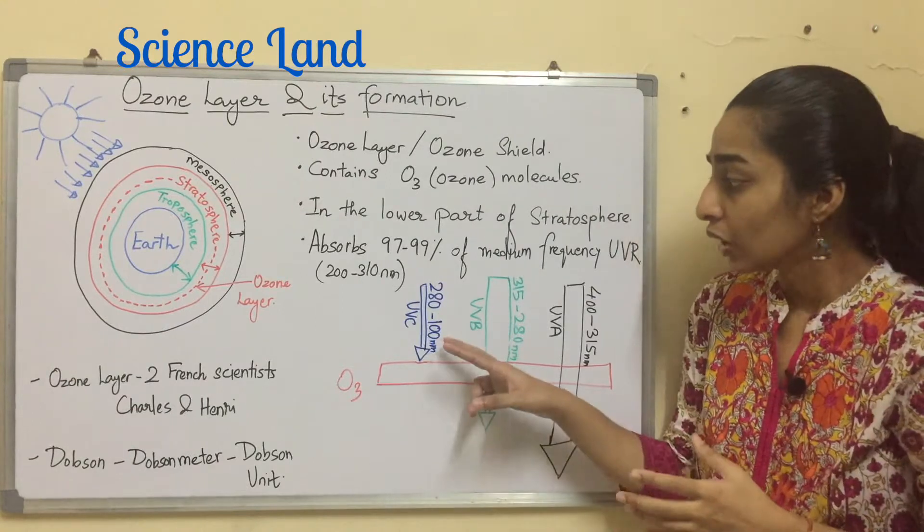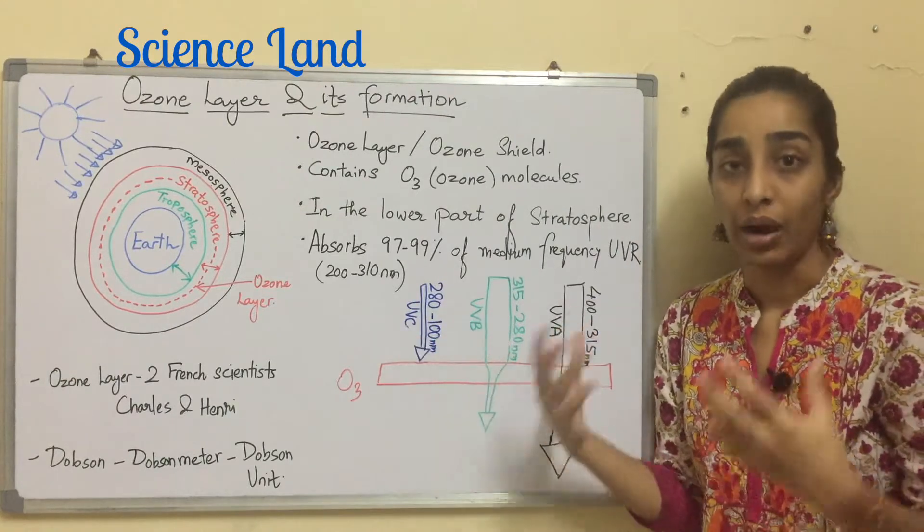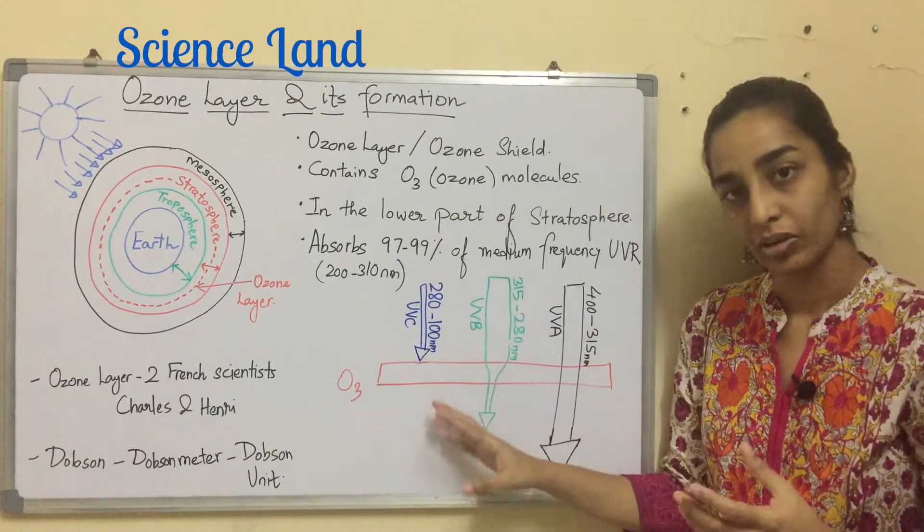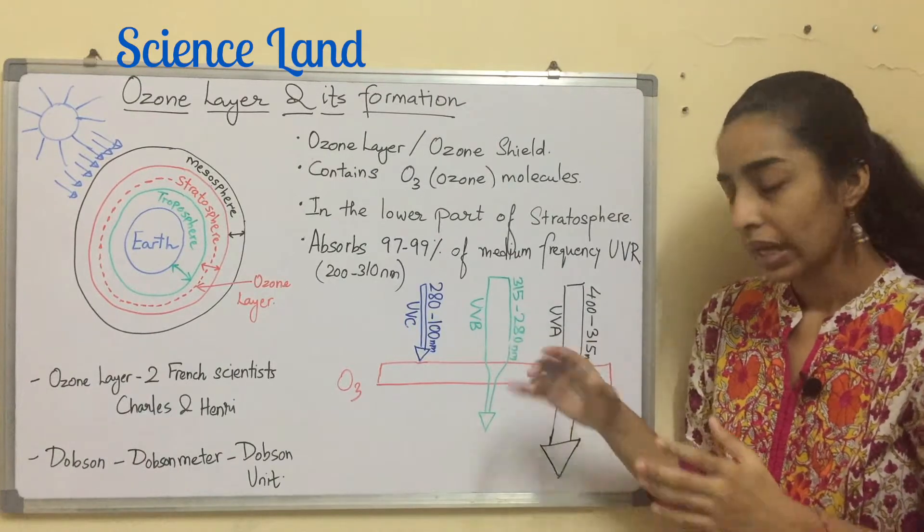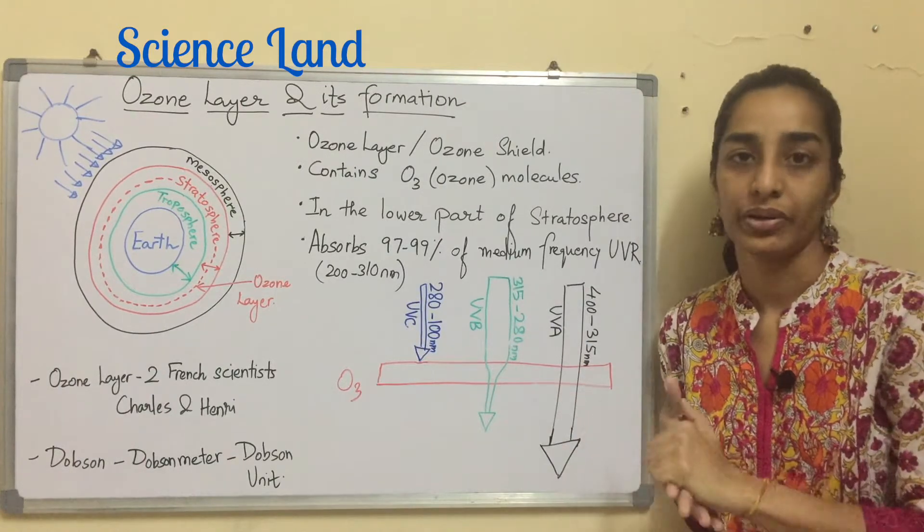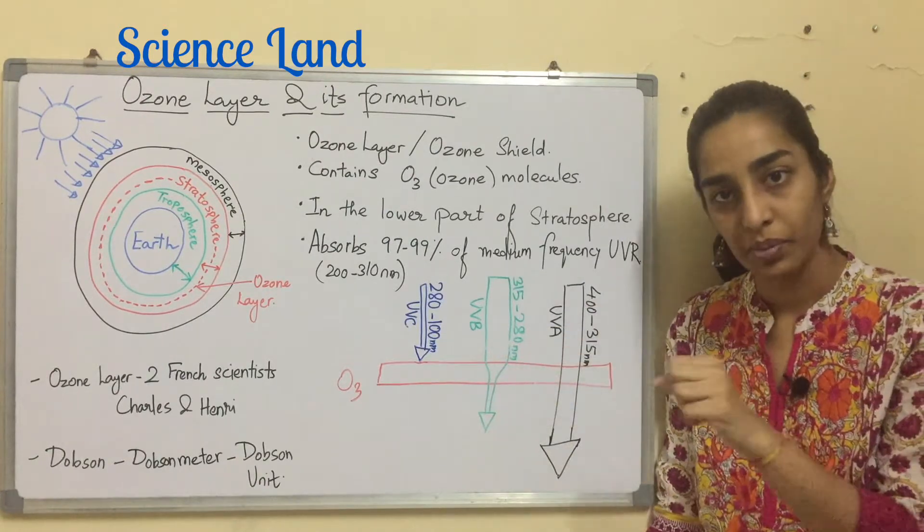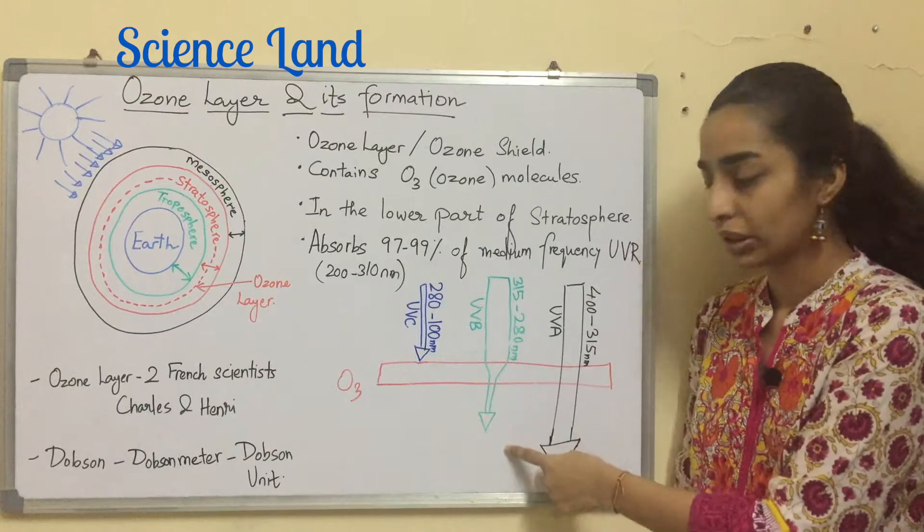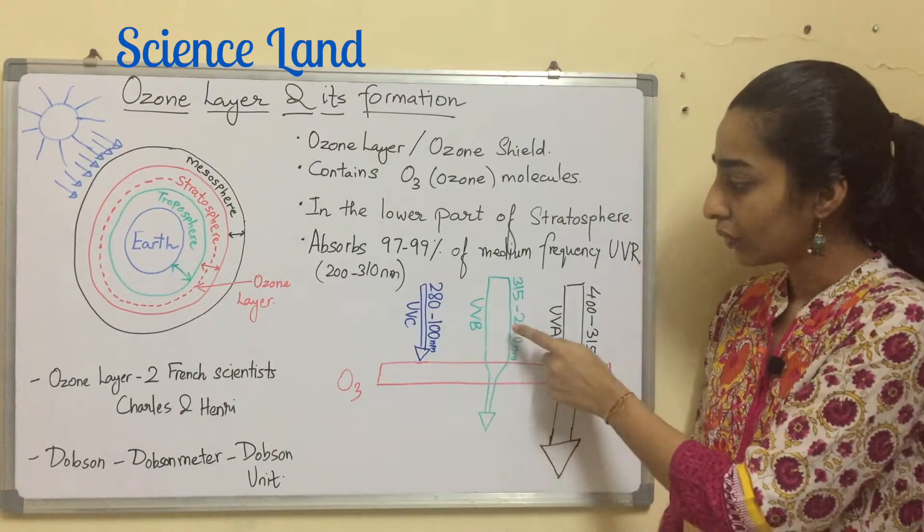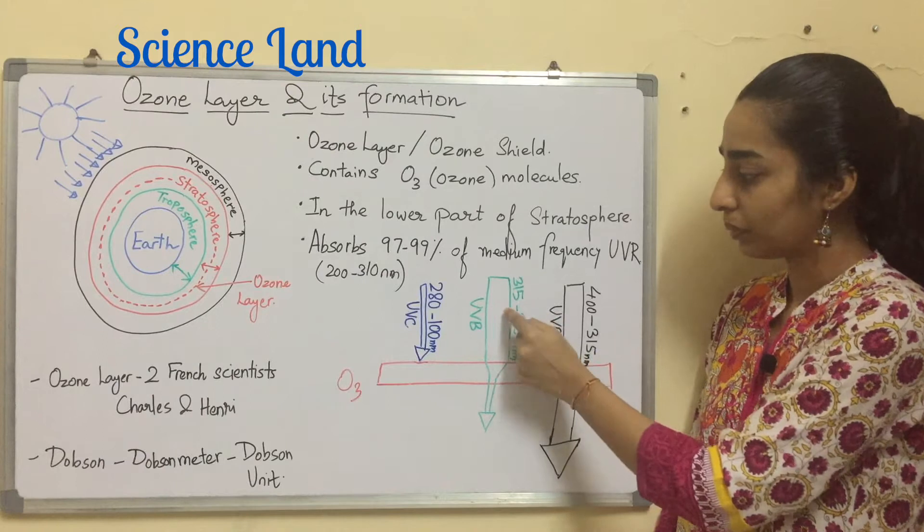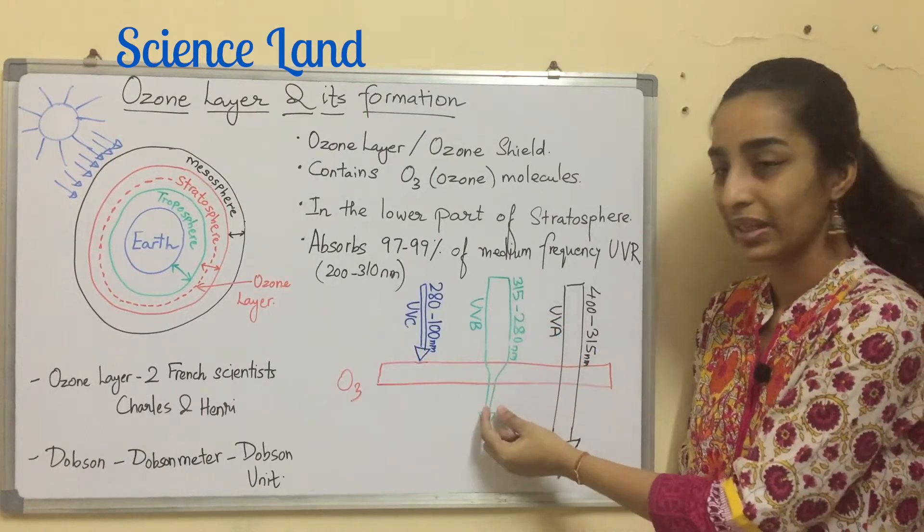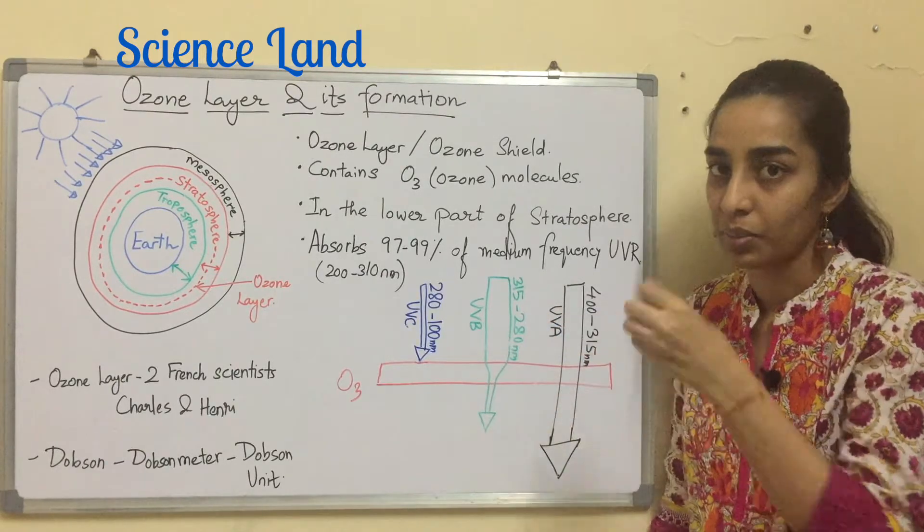Now when this radiation, the entire UV radiation falls on the ozone layer, UVC being the most harmful will not be allowed to pass through. UVB has benefits and disadvantages both, so partially it is absorbed by the ozone and partially it is let through. That's the reason I have drawn the width of UVB thicker and it's very thinner. A little bit is absorbed by the ozone.